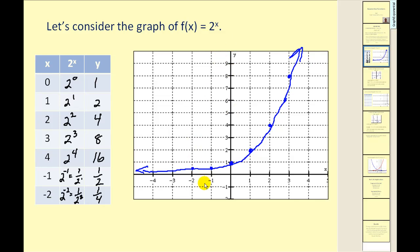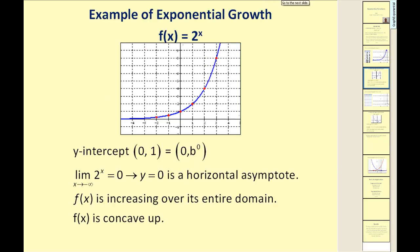Let's take a look at some of the characteristics of this graph. Notice the y-intercept is the point zero, one. The limit of the function as x approaches negative infinity is equal to zero, so we have a horizontal asymptote of y equals zero. It's increasing over its entire domain, and it's also concave up.